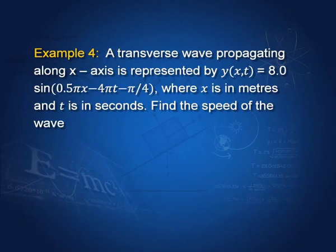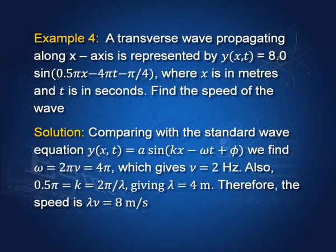Example 4: A transverse wave propagating along the x-axis is represented by a given equation where x is in meters and t is in seconds. To find the speed, compare with the form a sin(kx − ωt). From the equation, k = 2π/λ gives λ = 4 m, and comparing the time term gives ν = 2 Hz. Therefore the speed is λν = 8 m/s.